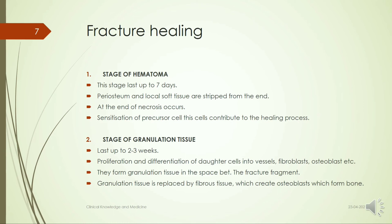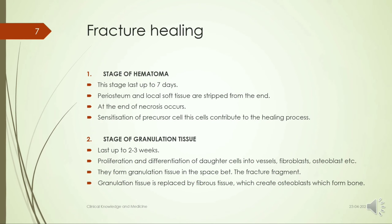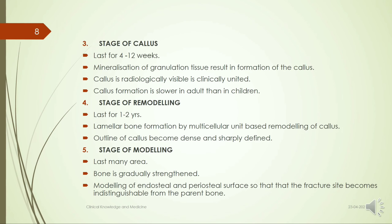Stage 2 is the stage of granulation tissue, lasting up to 2 to 3 weeks. There is proliferation and differentiation of cells into vessels, fibroblasts, and osteoblasts, which form granulation tissue in the space between the fracture fragments. This granulation tissue is then replaced by fibrous tissue, which creates osteoblasts that form new bone.